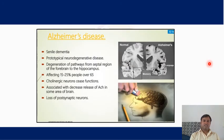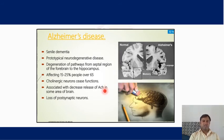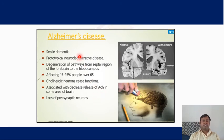One disease related to memory is Alzheimer's disease, in which cholinergic neurons are destroyed and deficiency of the acetylcholine neurotransmitter occurs. It mostly occurs in people over 65 years old, with loss of postsynaptic neurons. This disease is also called senile dementia.